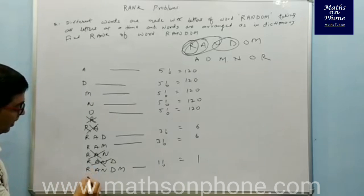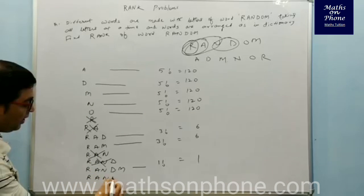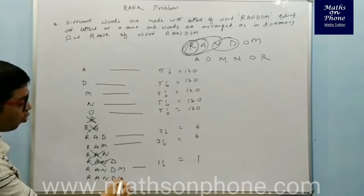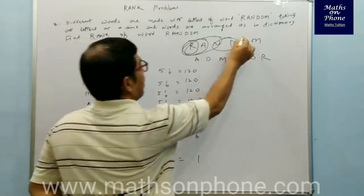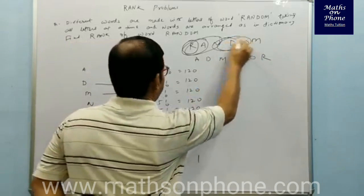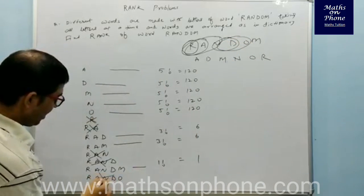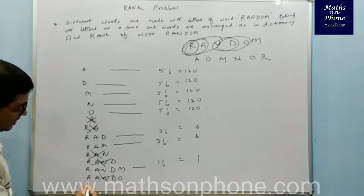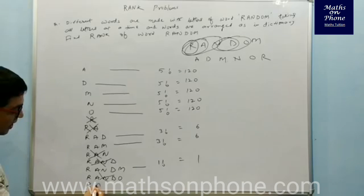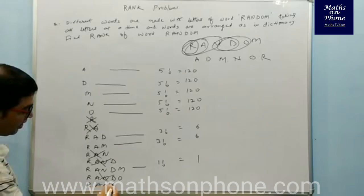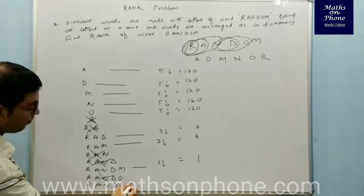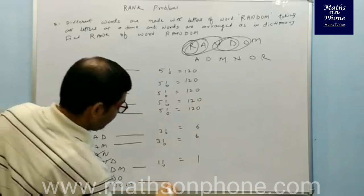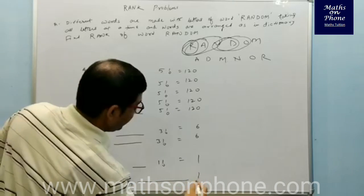Next I pick R-A-N-D-O, which is the actual sequence, so it will cancel. And the last letter gives R-A-N-D-O-M — that is the actual word.